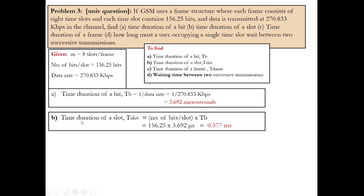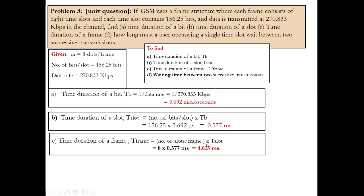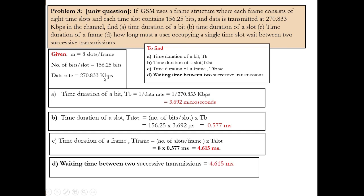For (b), time duration of a slot: T_slot = bits per slot × T_b = 156.25 × 3.692 μs = 0.577 milliseconds. For (c), time duration of a frame: T_frame = slots per frame × T_slot = 8 × 0.577 ms = 4.615 milliseconds. For (d), the waiting time between two successive transmissions equals the frame duration — every user must wait for their next turn: 4.615 milliseconds.